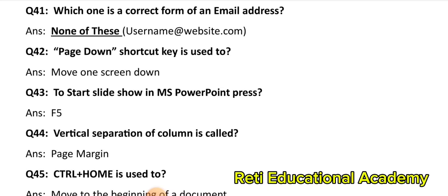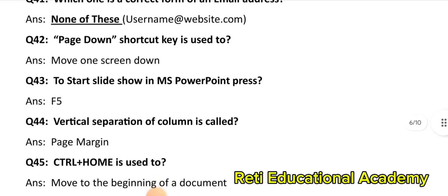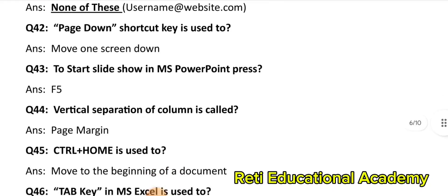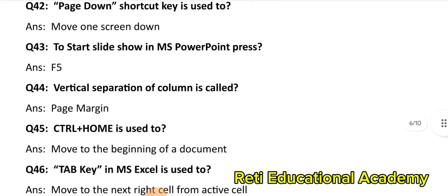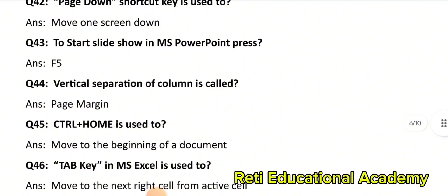Question number 43: To start a slide show in MS PowerPoint, press F5. Question number 44: Vertical separation of a column is called: Page Margin. Question number 45: Ctrl + Home is used to move to the beginning of a document. Question number 46: Tab key in MS Excel is used to move to the next right cell from the active cell.